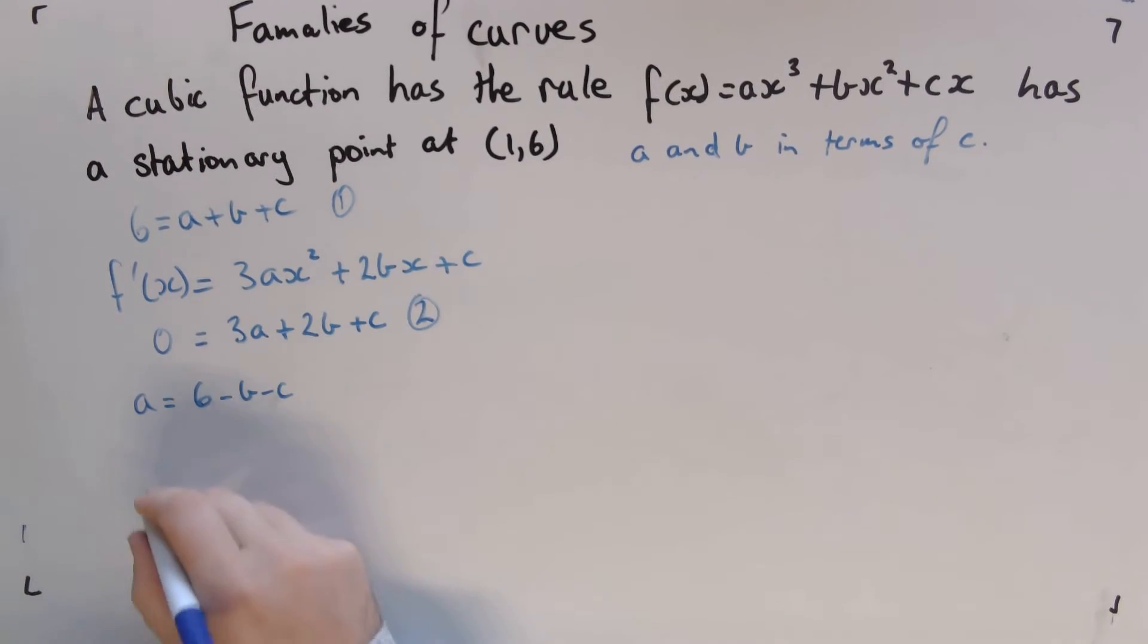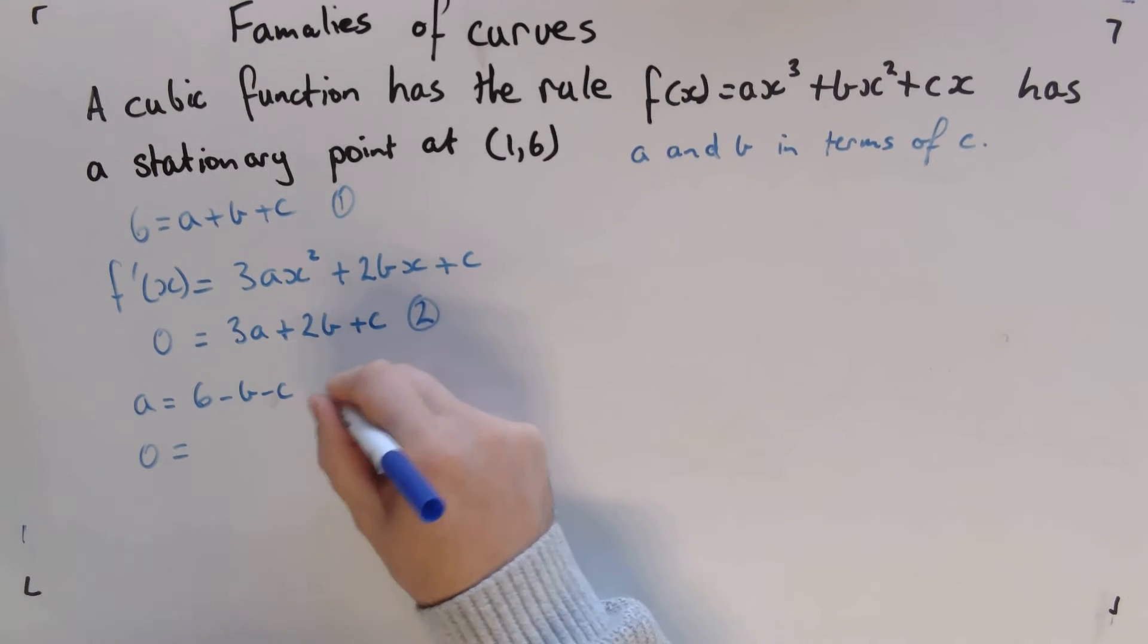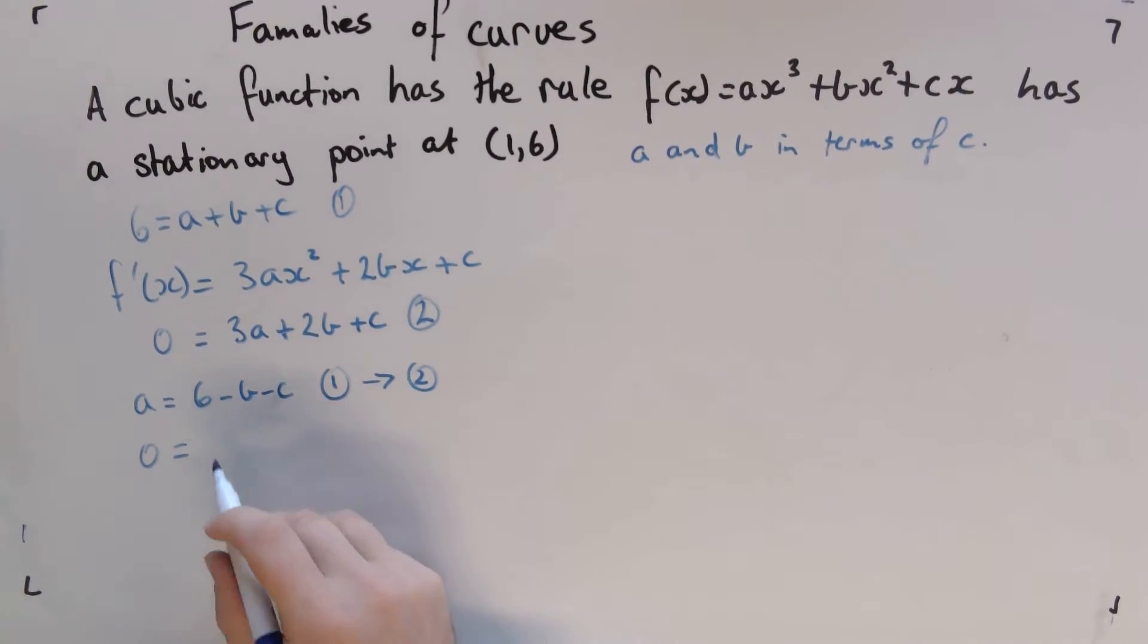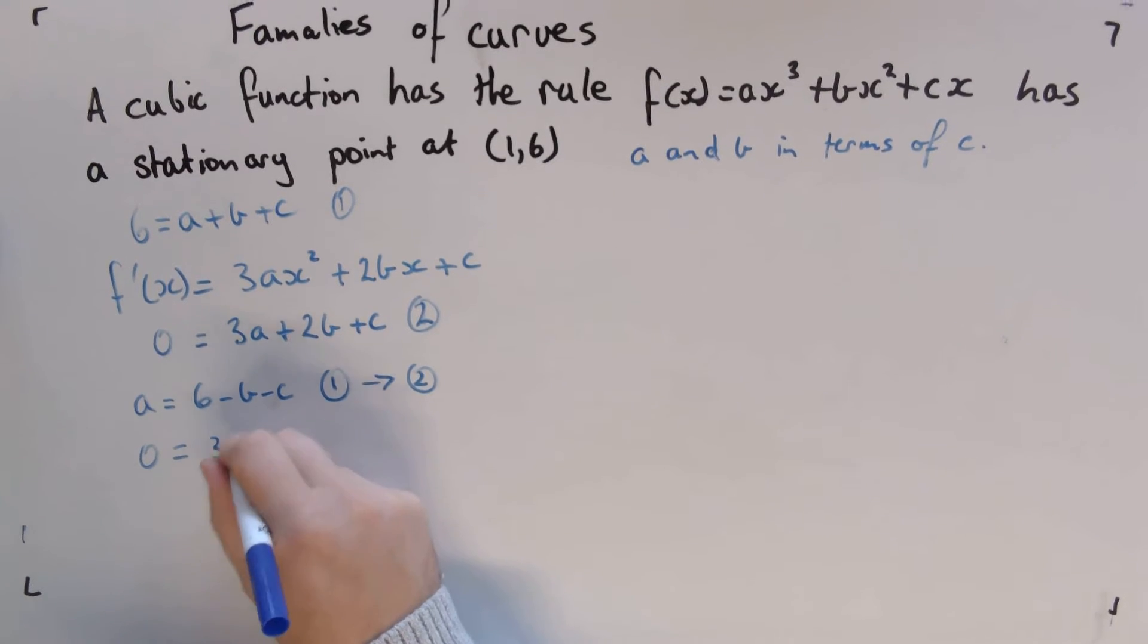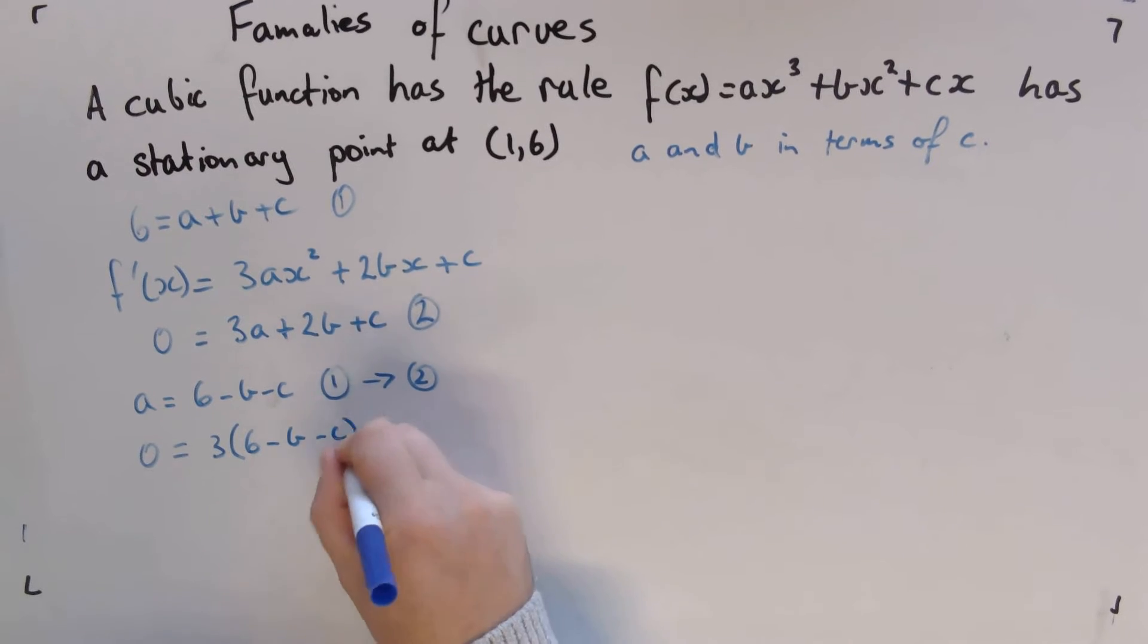So then in this equation, we're going to get 0 equals... we're going to put this now. So I'm going to put this equation 1 that I've rearranged, we're going to sub it into 2. So we're going to say we've got 3 times (6 - b - c) + 2b + c.